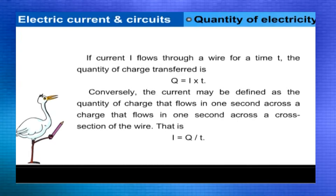Current and quantity of electricity. If current I flows through a wire for a time t, the quantity of charge transferred is Q = I × t. Conversely, the current may be defined as the quantity of charge that flows in one second across a cross section of the wire. That is, I = Q / t.